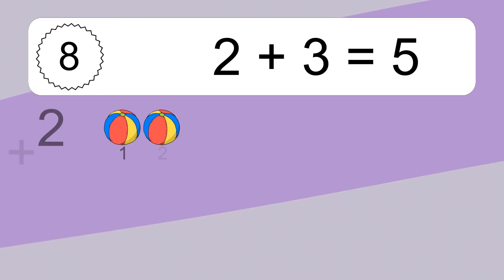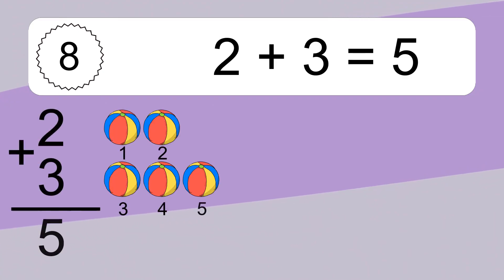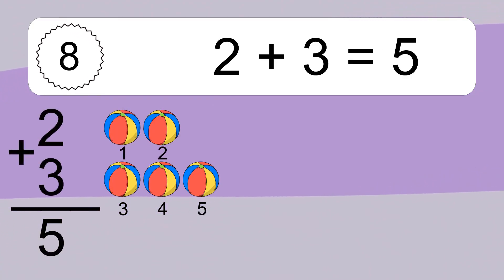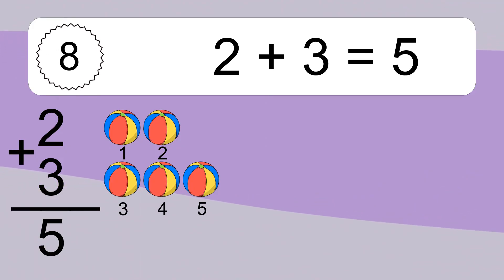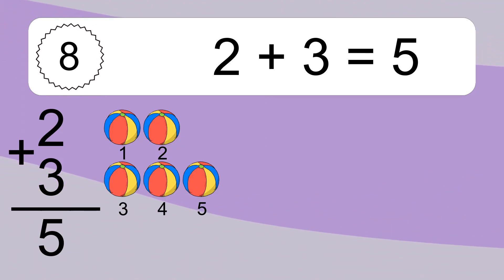2 plus 3 equals 5. Let's count it. 1, 2, 3, 4, 5.